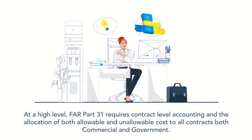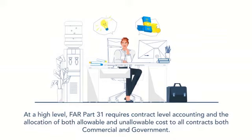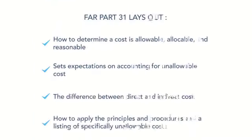At a high level, FAR Part 31 requires contract-level accounting — you have to be able to get the cost to the actual contracts or projects. The allocation includes both allowable and unallowable costs to both your commercial and government contracts. The FAR lays out in FAR Part 31 how to determine if cost is allowable, allocable, and reasonable; sets the expectations on accounting for unallowable costs; the difference between what a direct cost and an indirect cost is; how to apply the cost principles and procedures; and a list of specifically unallowable costs.